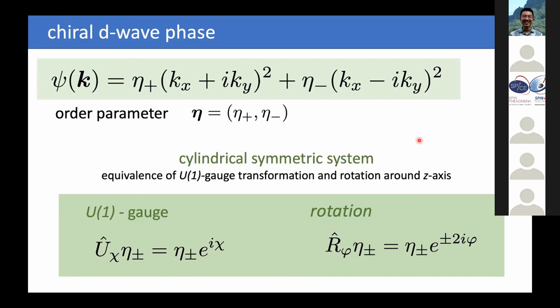Now doing the same analysis for the chiral D-wave state: we can write the gap function with two order parameter components for the plus and minus chirality domains. Here too there is an equivalence between gauge transformation and rotation around the C-axis: a rotation by φ gives e^{±2iφ} depending on the domain. By rotation, you can undo a gauge transformation, so we are in very much the same situation as for the chiral P-wave state.